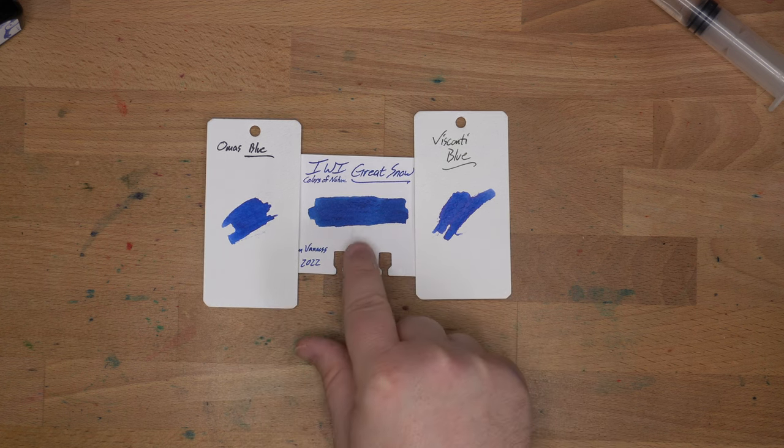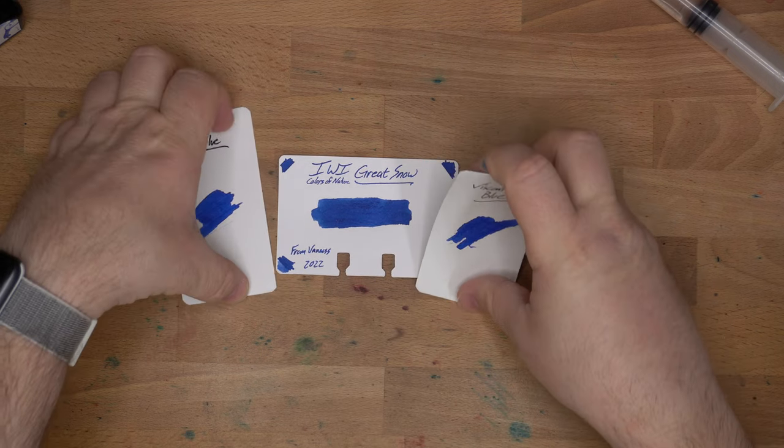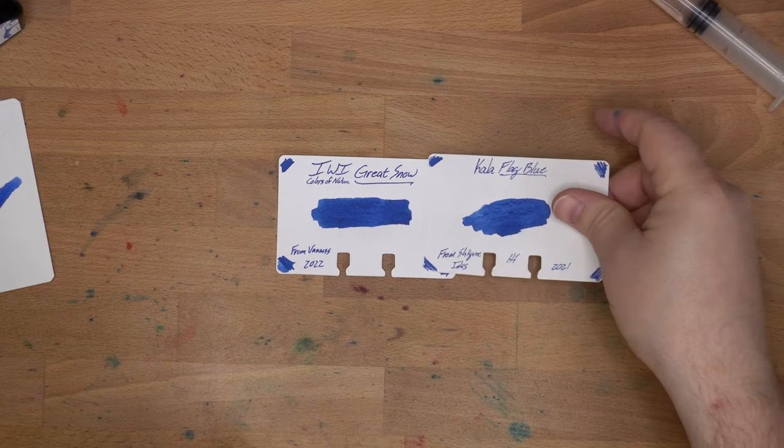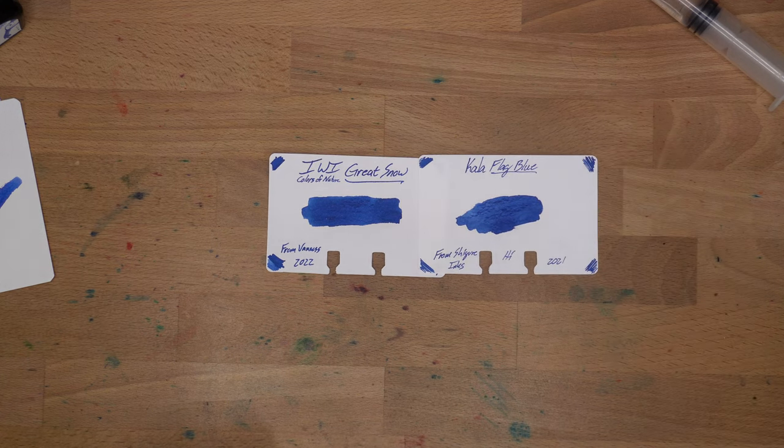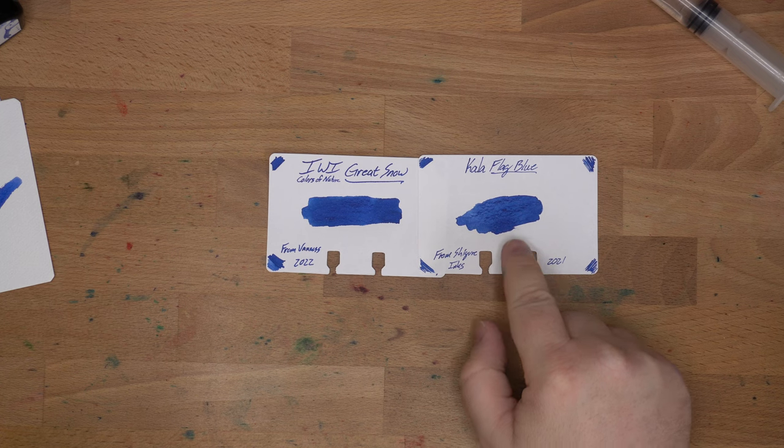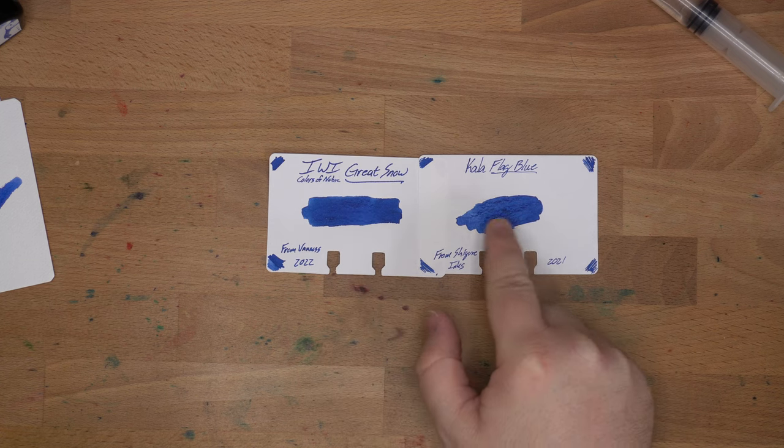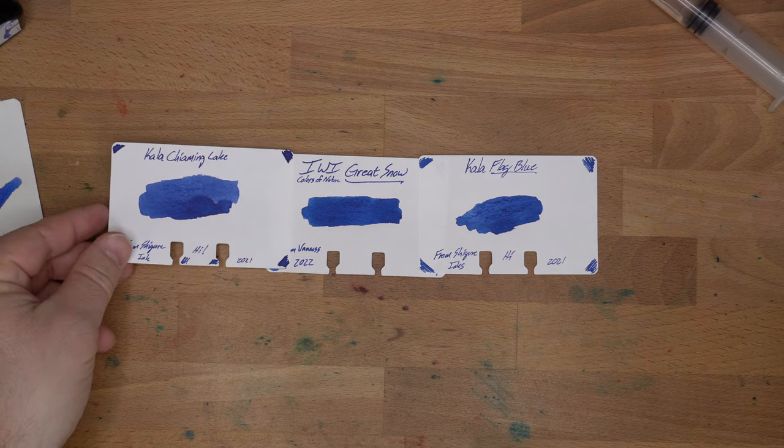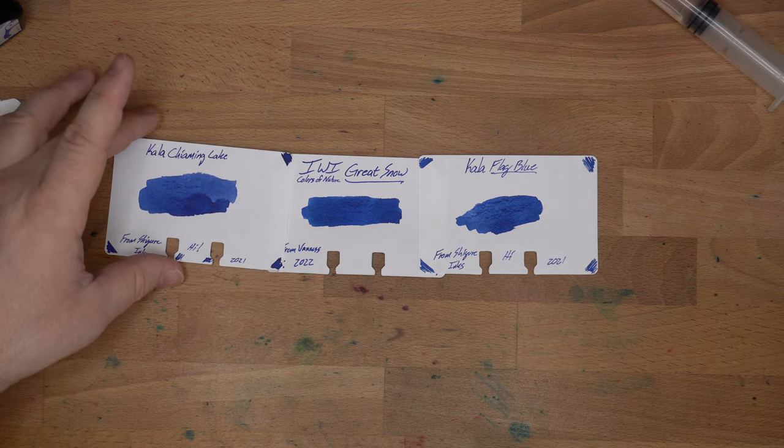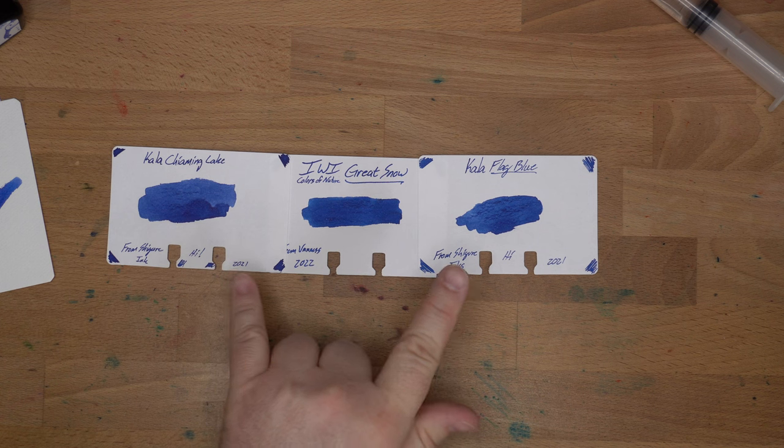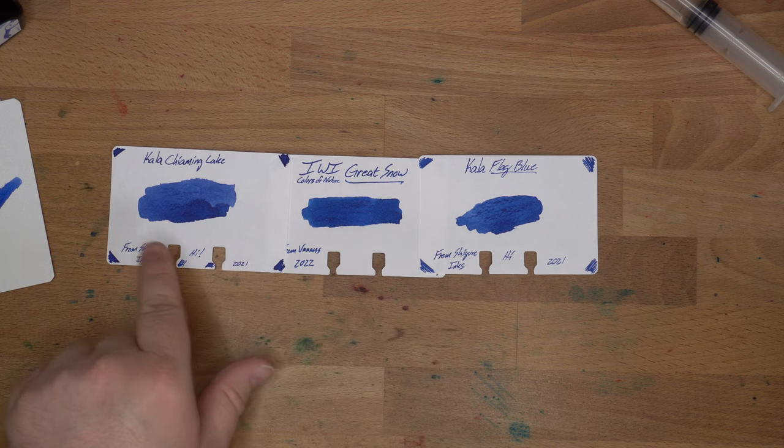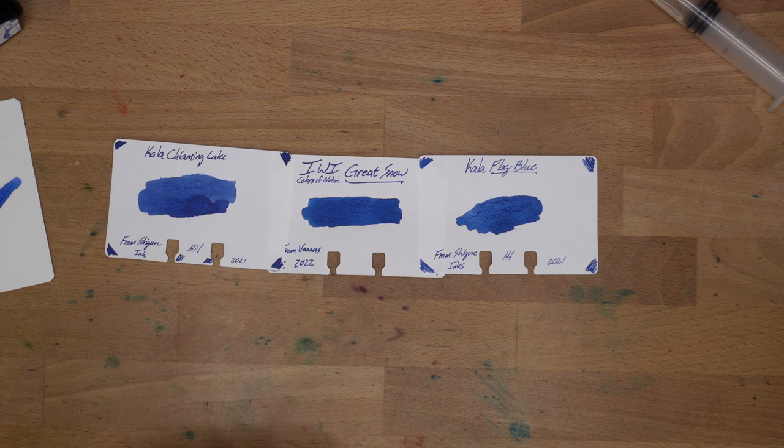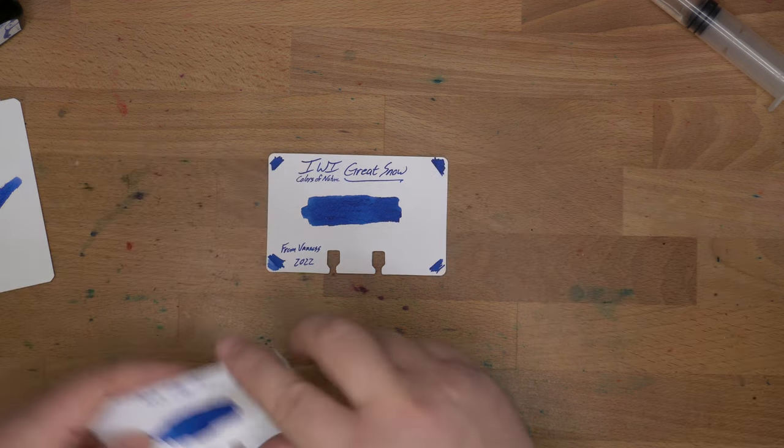Here is Kala Flag Blue, which is fairly close. You can see down in here you get a lot of this character, but it's a different... it's got some other stuff going on as well. And then another Kala ink, this is Chiming Lake. These are both... they're pigmented inks. And this one's pretty close. Chiming Lake. I haven't used this one yet, but pretty good. I got those from Chigurh Inks.